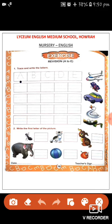Which letters? A, B, C, D, E. Okay. Next one. Write the first letter of the picture. What is written here? Write the first letter of the picture.